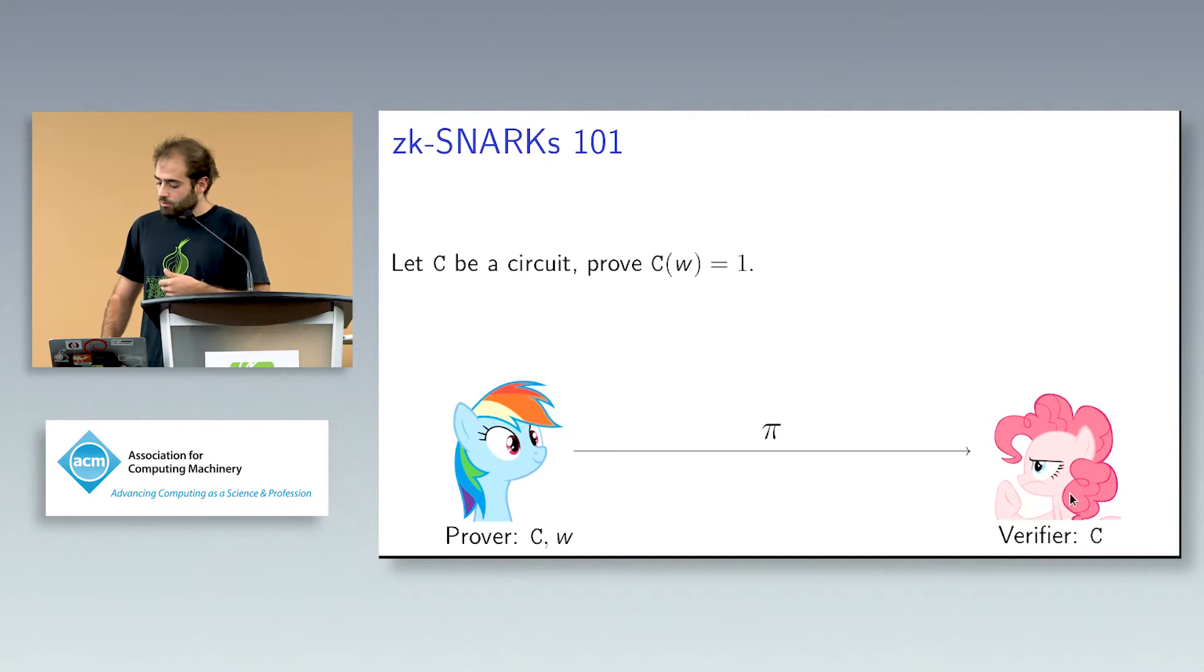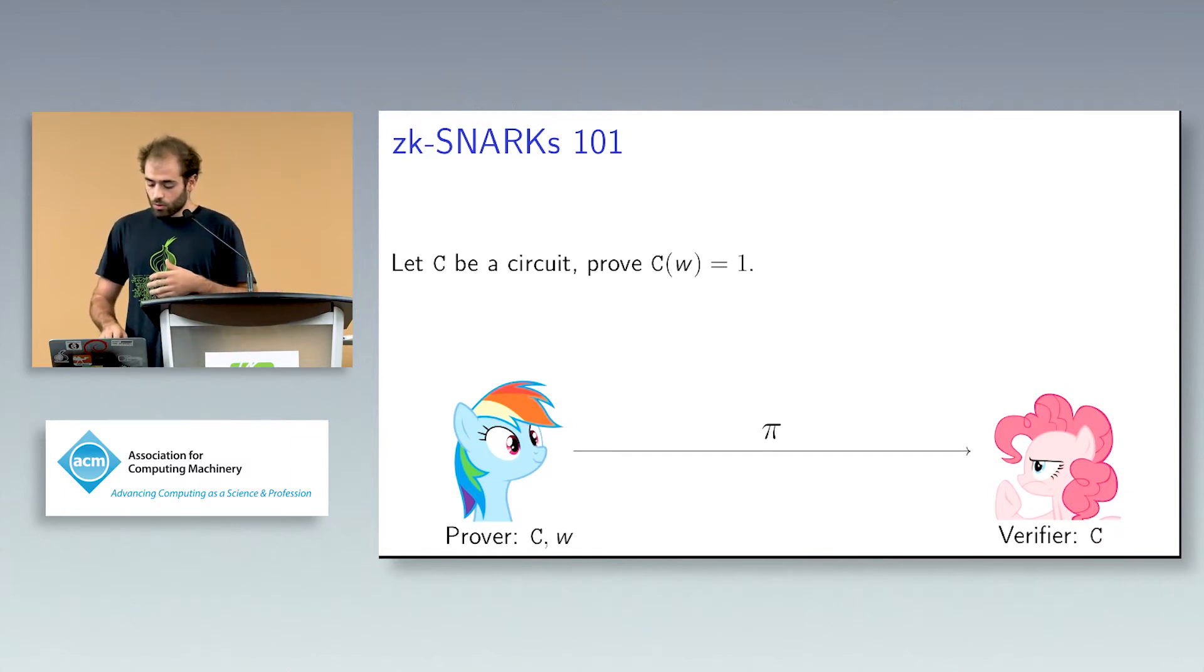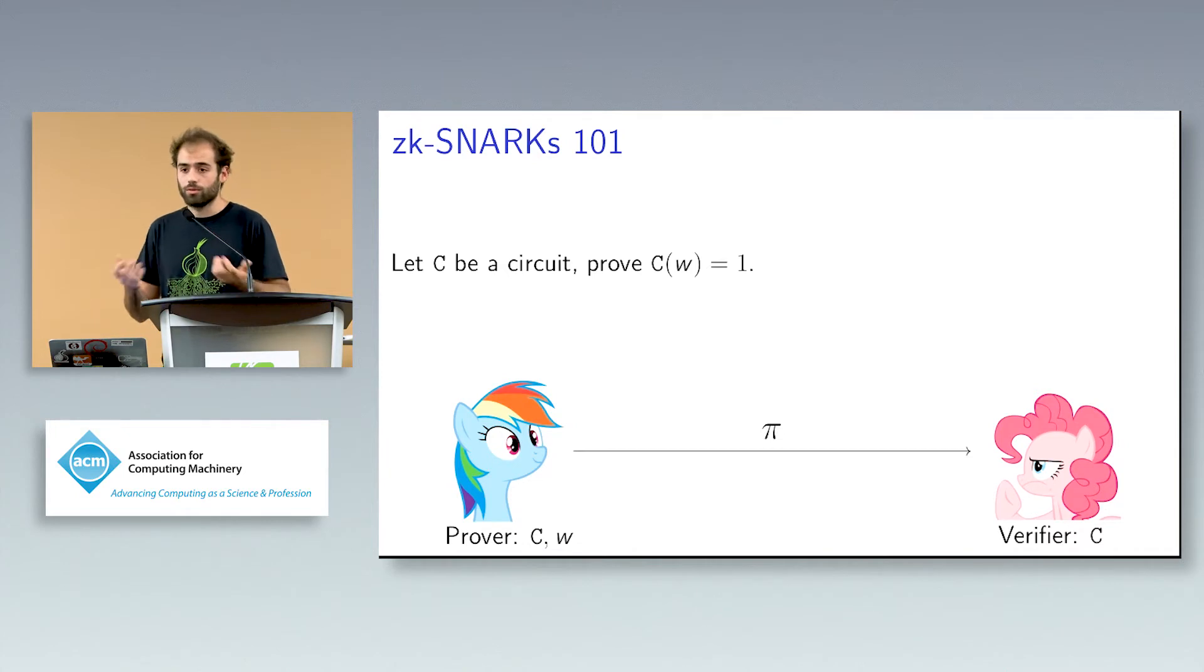For example, you could say that Rainbow Dash over here is this Microsoft server where I can delegate the computation and I would like to have accountability for this server. Pinkie Pie would like to have a proof that this computation that has been remotely done satisfies some properties. What we more formally say is that the prover is an algorithm that takes as input a statement, in this case a circuit C, and a valid input for the circuit W, and produces this cryptographic object, the proof.